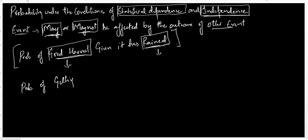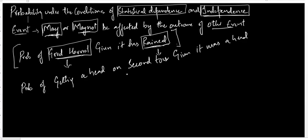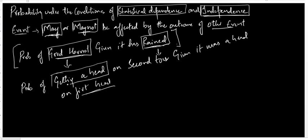Now suppose we consider the probability of getting a head on the second toss given it was a head on the first toss. Does the first toss result affect the probability of getting a head on the second toss? Absolutely not. In this case the probabilities are independent, so this is the condition of statistical independence.